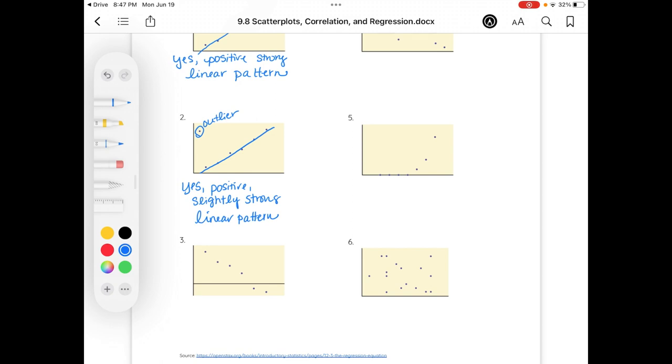Now let's take a look at number three. This we are, yes, in a linear pattern, but we're now in a negative downward trend. So I'm going to say yes, still strong. Negative, since our slope is negative, linear pattern.